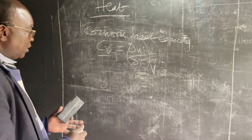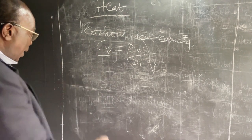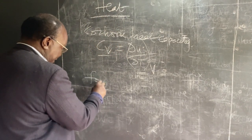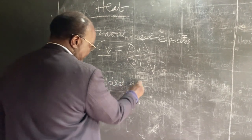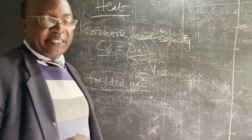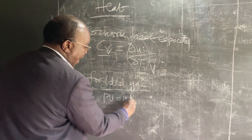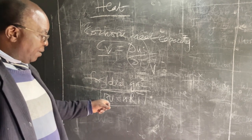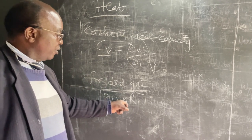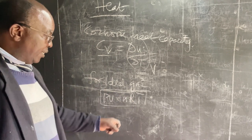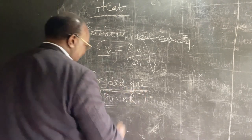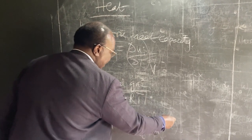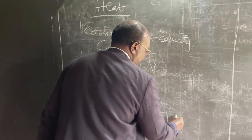These heat capacities are related to expressions involving ideal gases. An ideal gas is a gas which obeys the equation of state PV equals NRT — where P is pressure, V is volume, N is the number of moles, R is the gas constant, and T is the temperature. For ideal gases in general, Cp minus Cv is equal to NR. This is an important relation true for ideal gases.